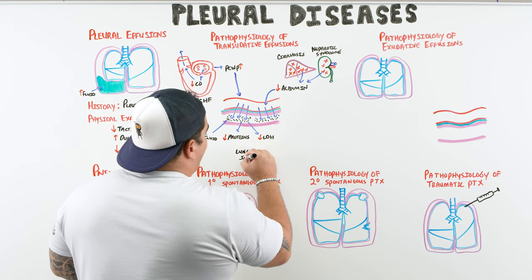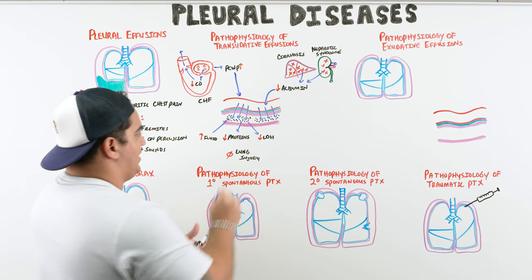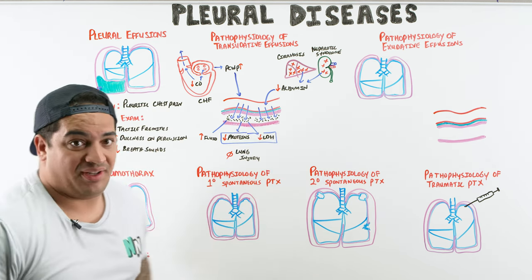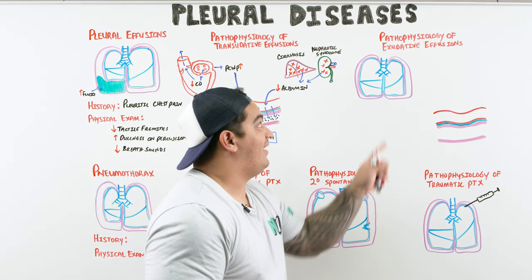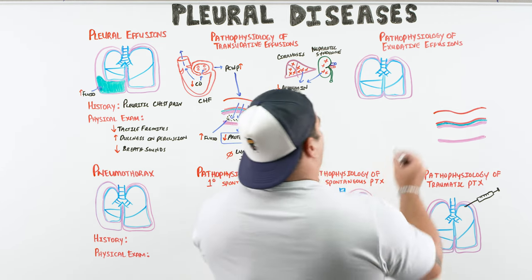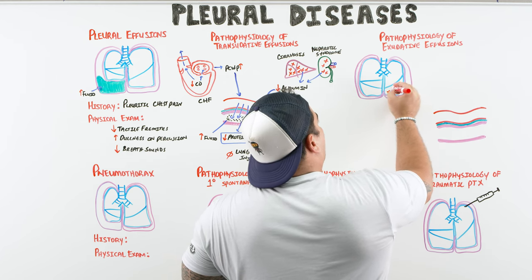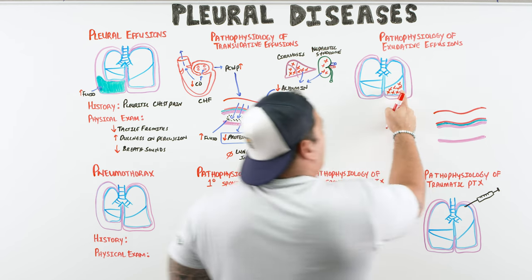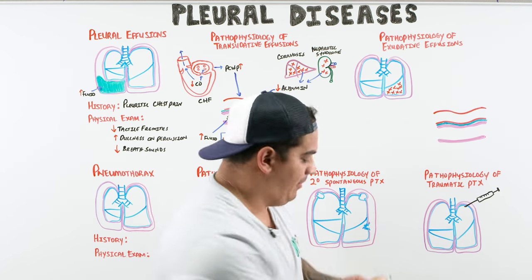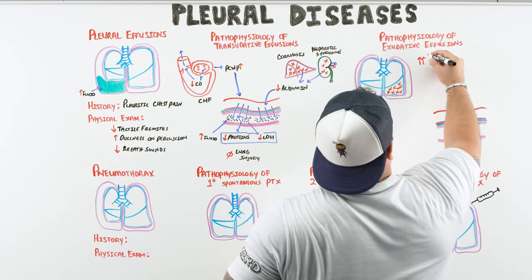With exudative effusions, there is lung injury or inflammation — involving the lung parenchyma and the tiny blood vessels in that area. When the lung is injured or inflamed, a cytokine pathway is triggered.